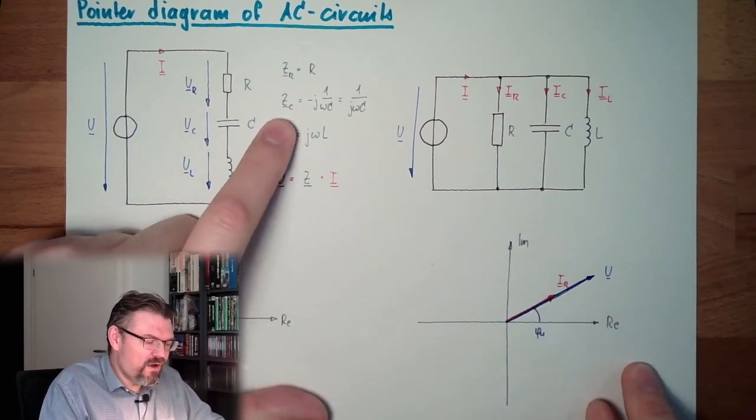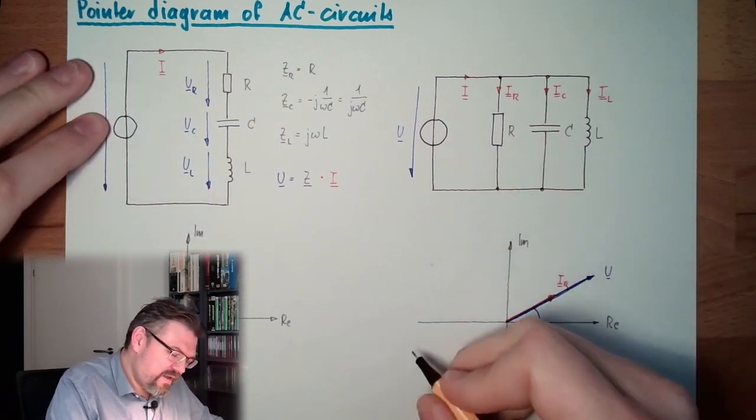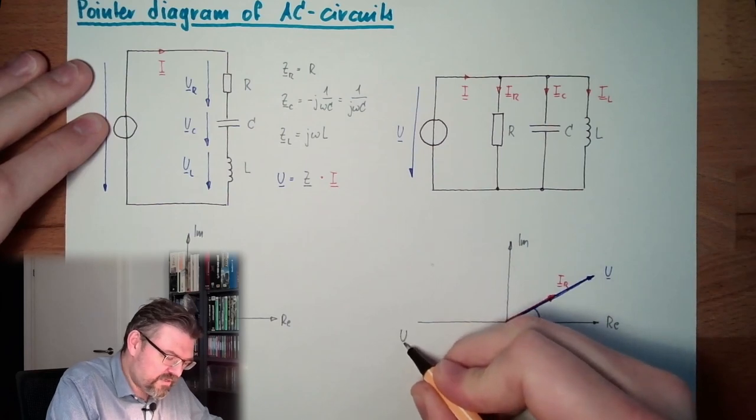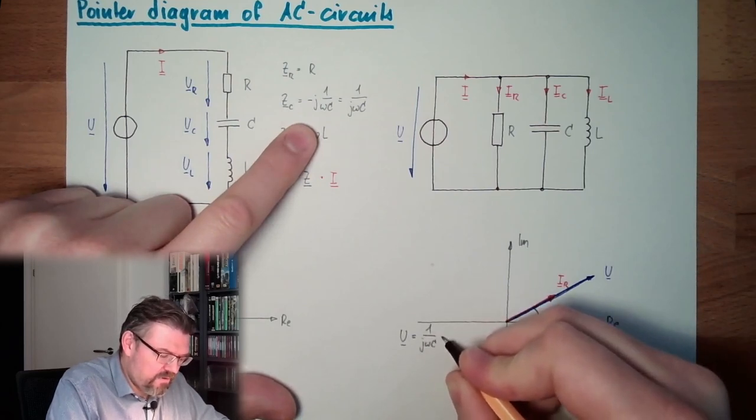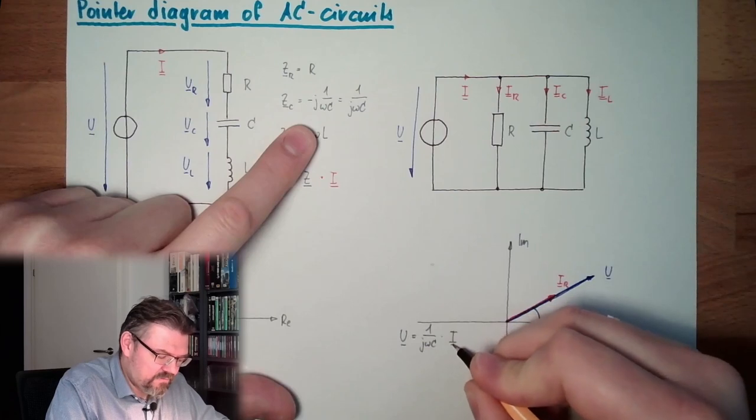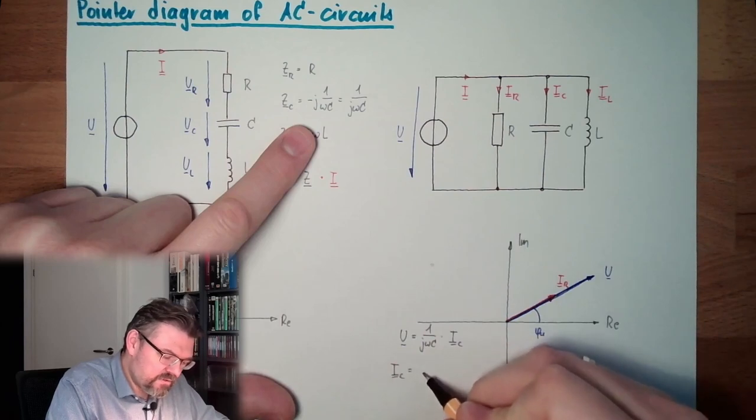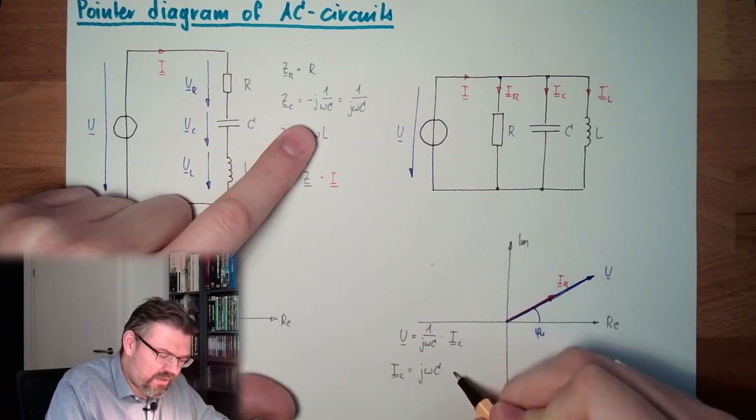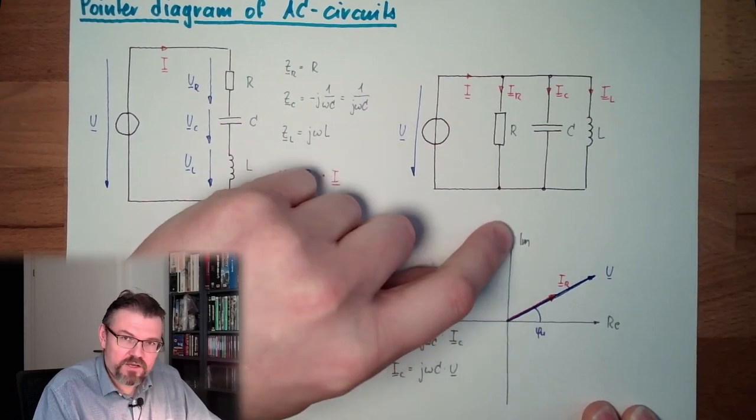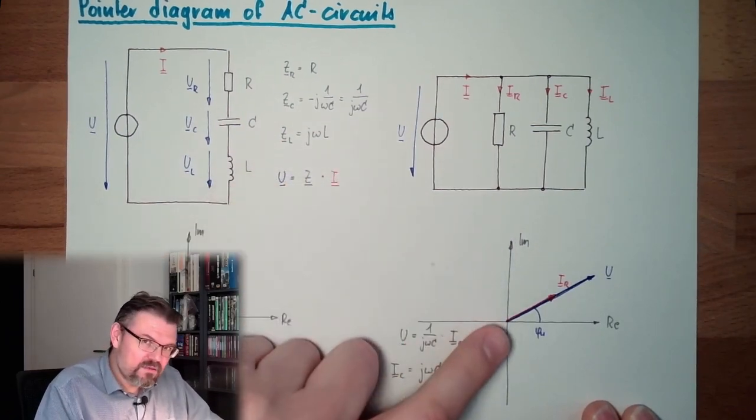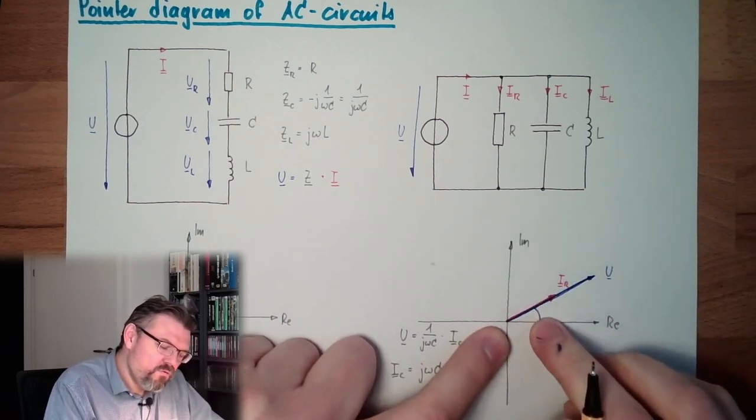Let's have a look what it means for C. So we say UC, or U in this case, U equals ZC, it's 1 divided by J omega C multiplied by IC. And we want to calculate IC. So my IC equals J omega C multiplied by U. So U is this pointer, J omega C is pointing in this direction. We have to add the angles of our two, so we have VU plus 90 degrees.